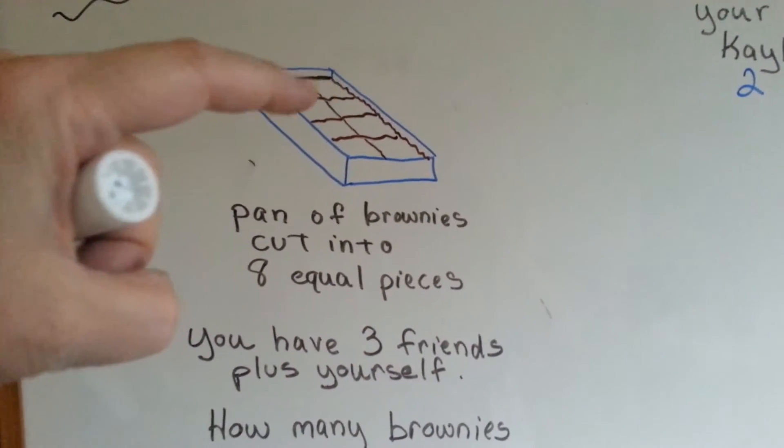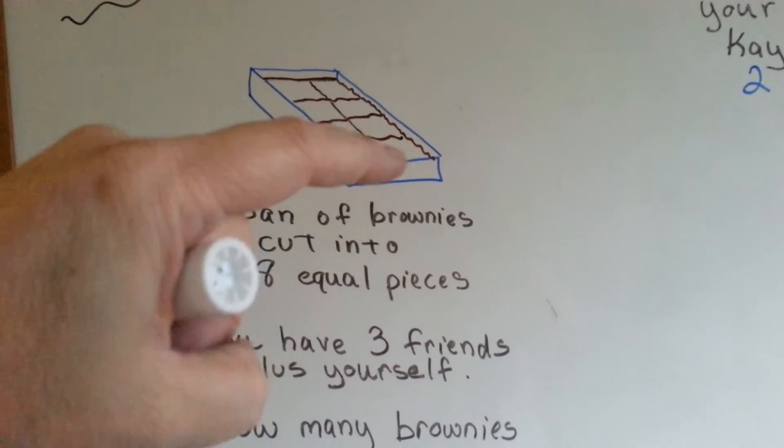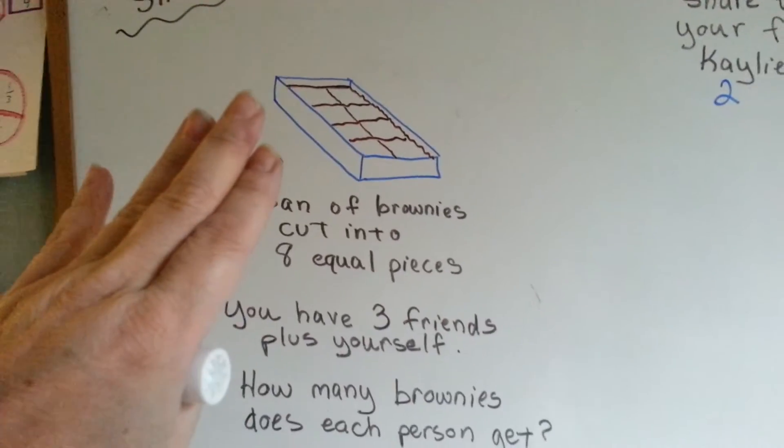And how many brownies are here? One, two, three, four, five, six, seven, eight.